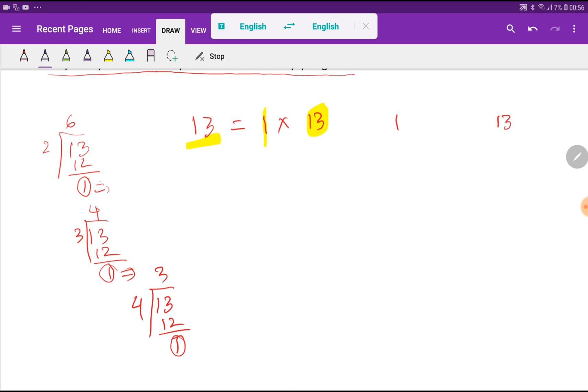So the positive factors of 13 are 1 and 13. What will be the negative factors of 13? To find out negative factors, you just need to add a minus sign before the positive factors.